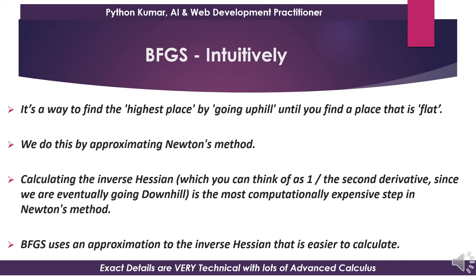In BFGS we are actually going uphill — toward the highest place on the curve — whereas in gradient descent we go downhill. In BFGS we go up the hill until we find a flat surface. The top of the hill is flat, so in BFGS we go up until we find that flat surface at the top of the hill. We use Newton's method for this purpose.